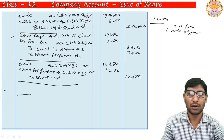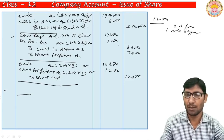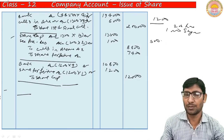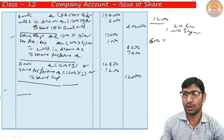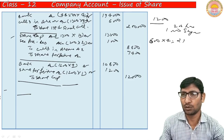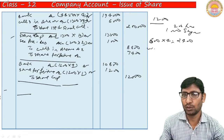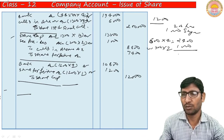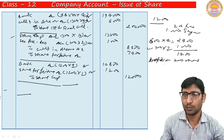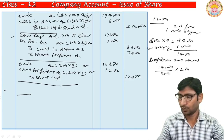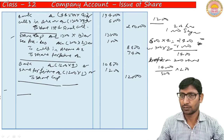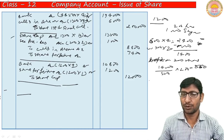Final entry — transfer profit to Capital Reserve. For Ram's 500 forfeited shares: amount forfeited = Rs. 2,400 (application received); premium not shown on forfeiture, so 500 × Rs. 2 premium = Rs. 1,000 subtracted. Remaining = Rs. 1,400. Profit on 200 reissued shares = Rs. 1,400 × 200/500 = Rs. 560.